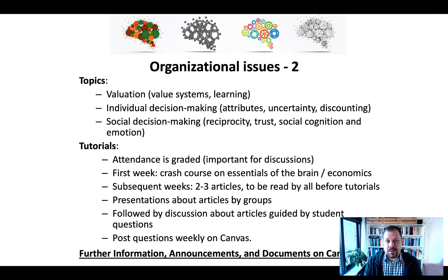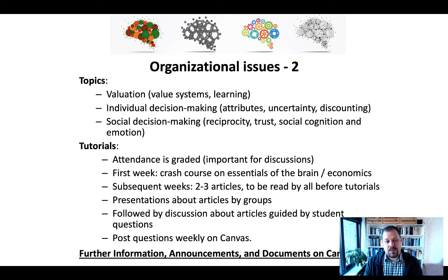More importantly, post general questions about the relevance of the article and how you think it plays into the debate between economics and neuroeconomics — namely, how does understanding what happens in the brain help neuroeconomics, and how does understanding how we value things help us understand how the brain works? This bidirectional communication between the two main fields makes up neuroeconomics. There will be further information about this announced on Canvas, and it's also in the course manual.